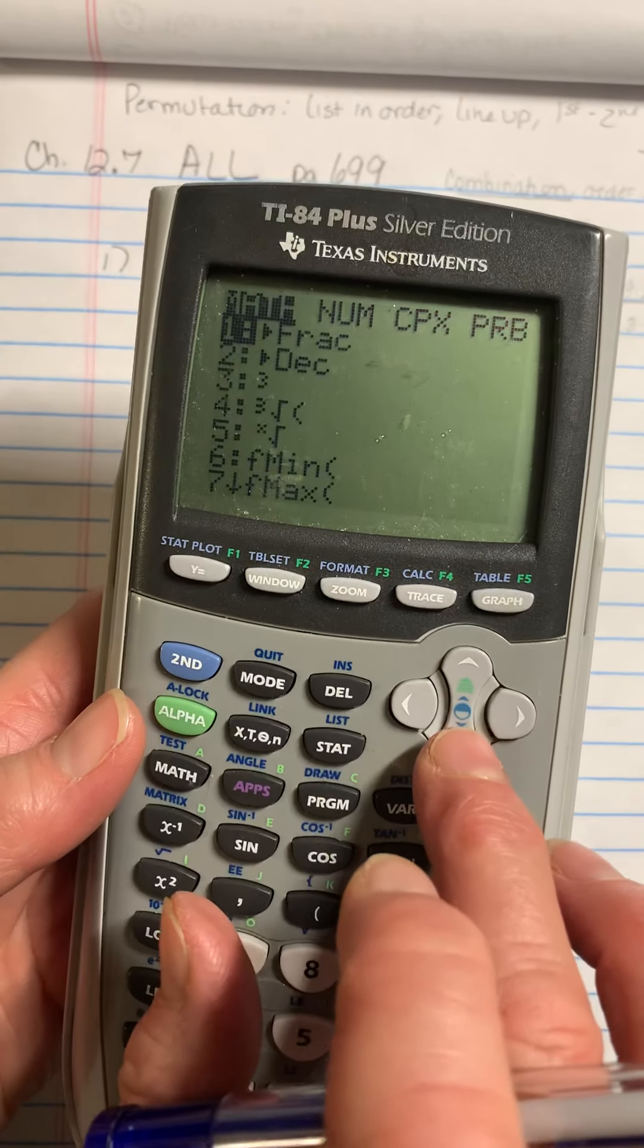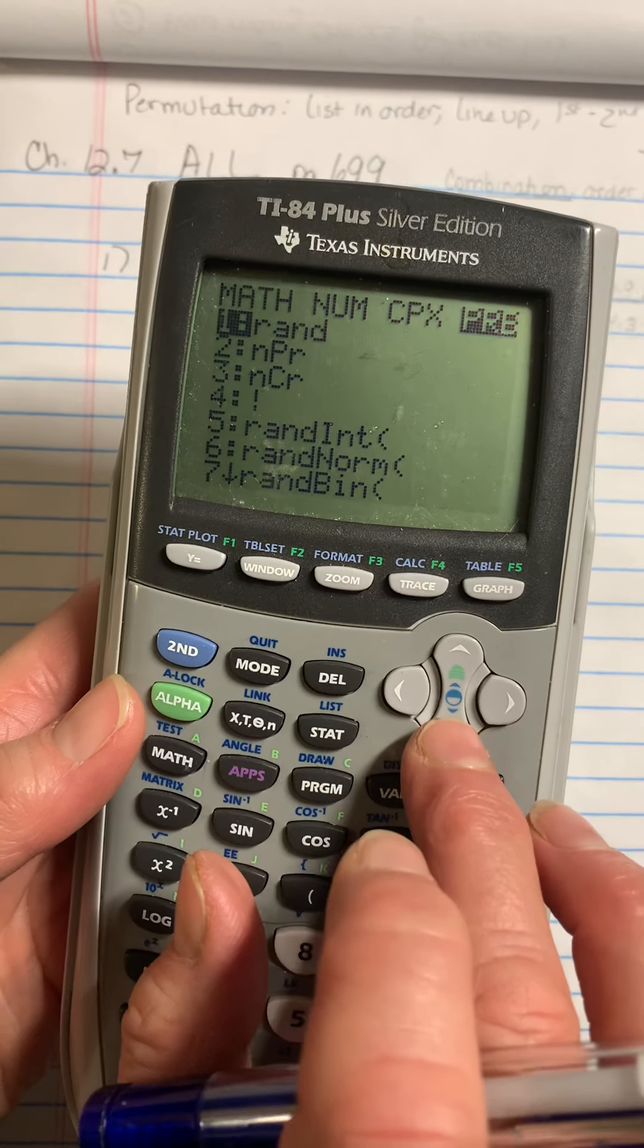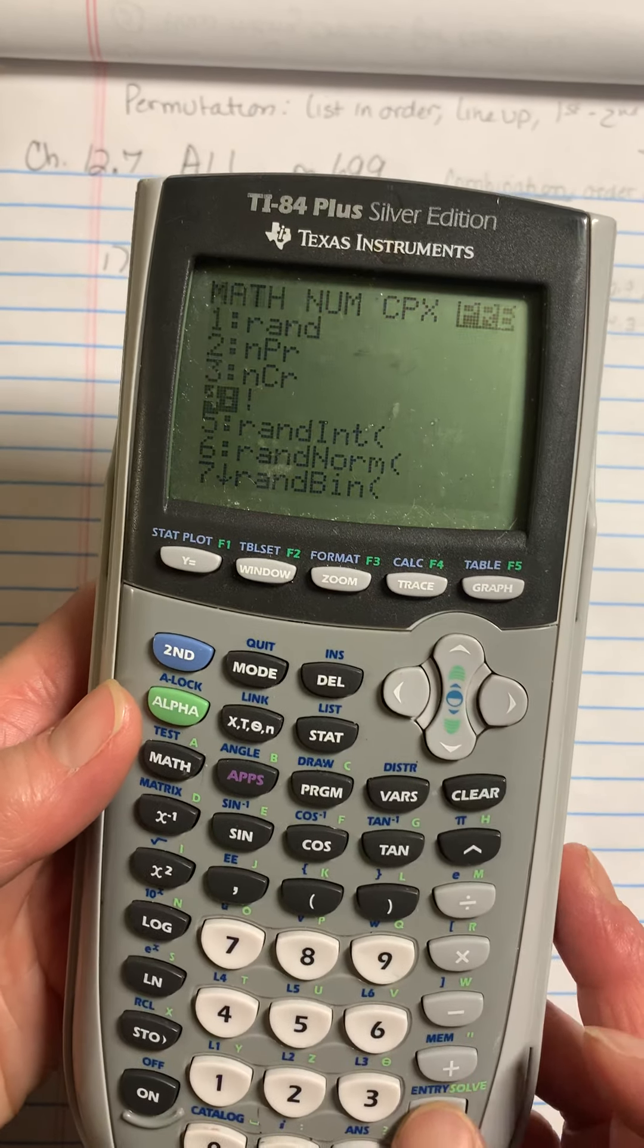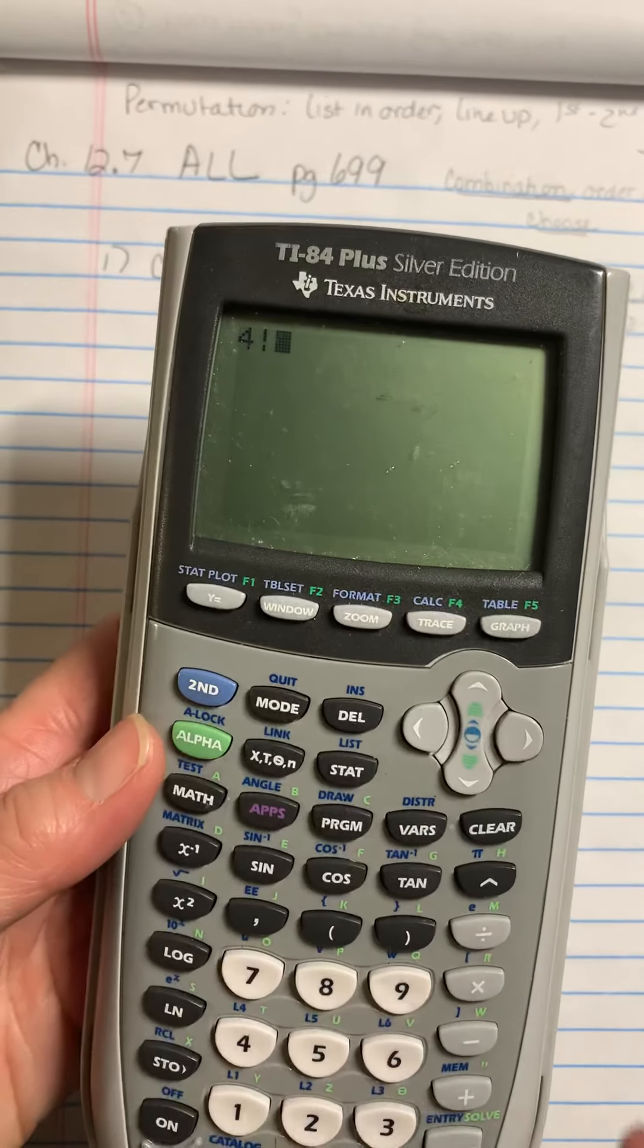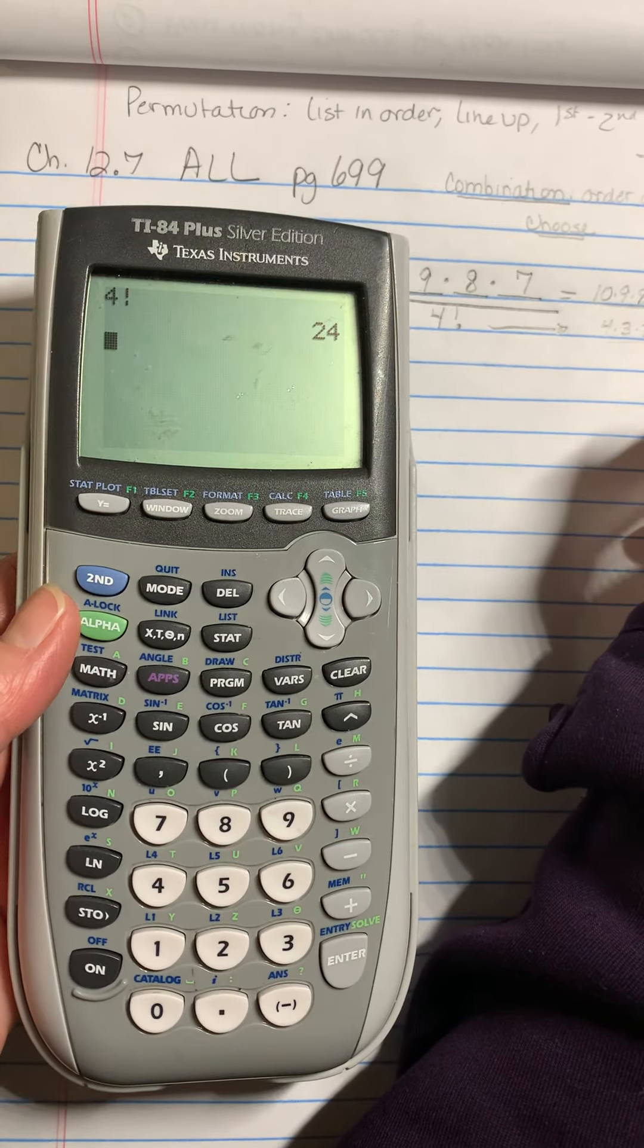math key, down over to probability, and then down to number four, enter, it'll do the factorial for me. I hit enter, and I have 24.